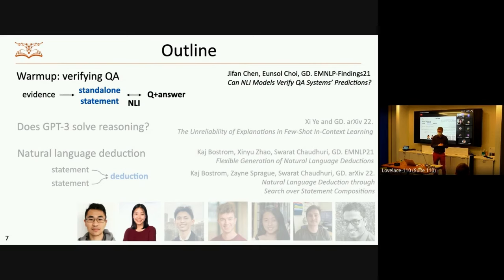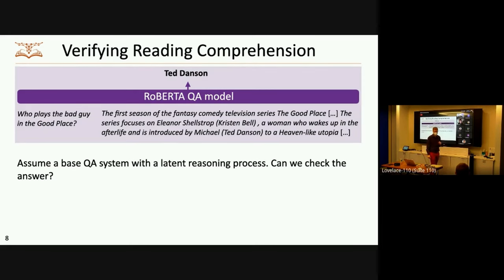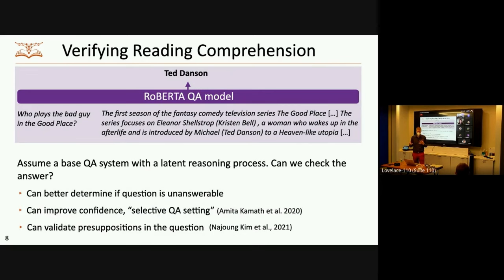We're going to start off with this QA verification project — this is work led by my student Jifan Chen, joint with Unsel, and appeared at EMNLP Findings last year. The idea behind this task is that we want to take any kind of QA model — I'm going to call this a latent reasoning model — that returns an answer to a question, and what we're going to try to do is check this answer. If we have the question 'who plays the bad guy in The Good Place,' we can throw this into some kind of retrieve-and-read model and get an answer 'Ted Danson' out. Then we're going to look back at the evidence and say, was this really the answer? It can help us figure out if the question's unanswerable, improve confidence in the selective QA setting, and validate presuppositions in the question.